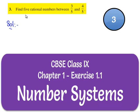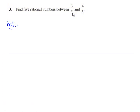Now let us move on to the third question. The question is: find five rational numbers between 3/5 and 4/5.